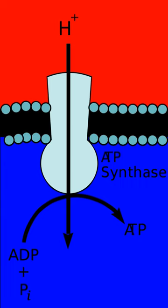In Complex III, the cytochrome BC1 complex or CoQH2-cytochrome C reductase (EC 1.10.2.2), the Q-cycle contributes to the proton gradient by an asymmetric absorption and release of protons. Two electrons are removed from QH2 at the Qo site and sequentially transferred to two molecules of cytochrome C, a water-soluble electron carrier located within the intermembrane space. The two other electrons sequentially pass across the protein to the Qi site where the quinone part of ubiquinone is reduced to quinol.